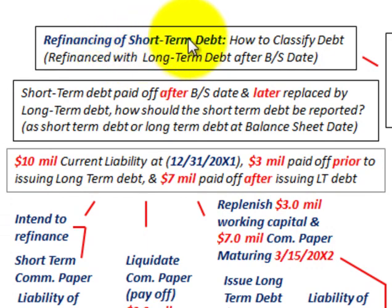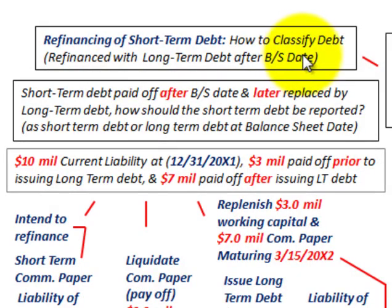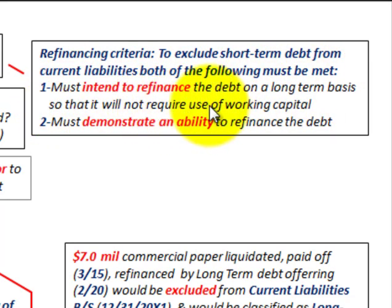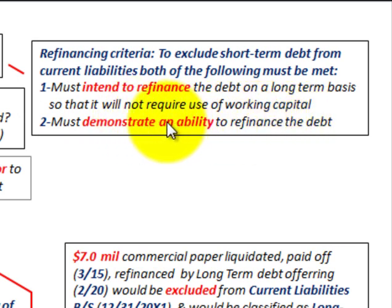Here we're going to be looking at refinancing short-term debt and how we'd classify this short-term debt after refinancing it with long-term debt after the balance sheet date. To exclude short-term debt from current liabilities, both of the following must be met: number one, you must intend to refinance the debt on a long-term basis so that it will not require the use of working capital; and number two, you must demonstrate an ability to refinance the debt — that is, you must have the financial credit to do so.